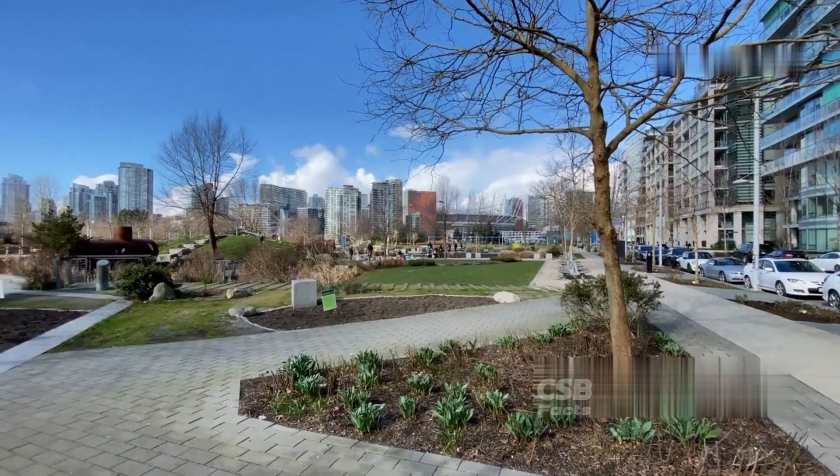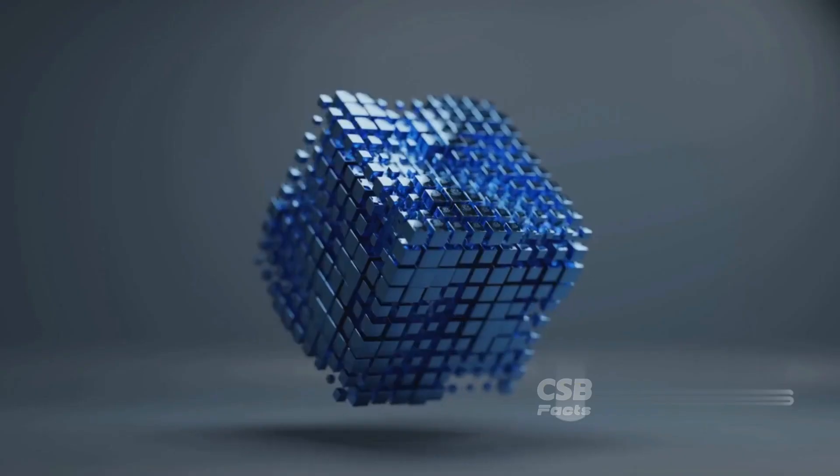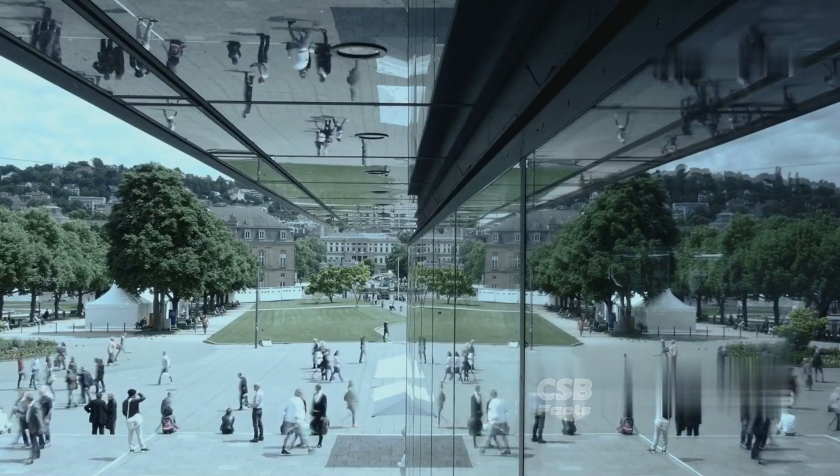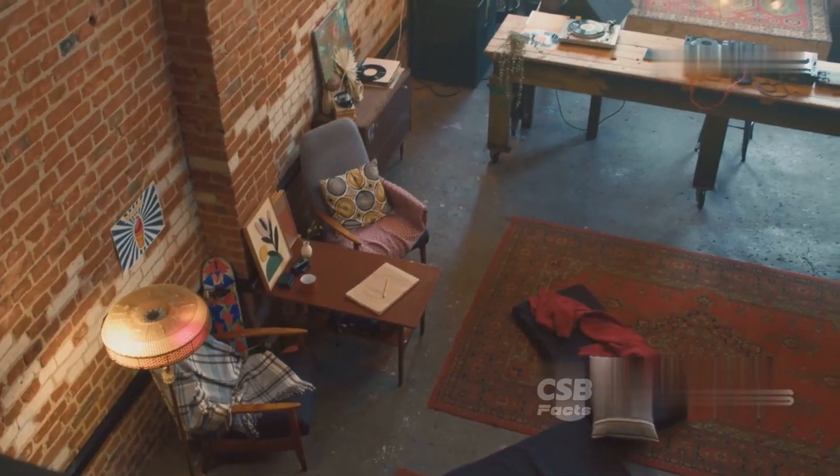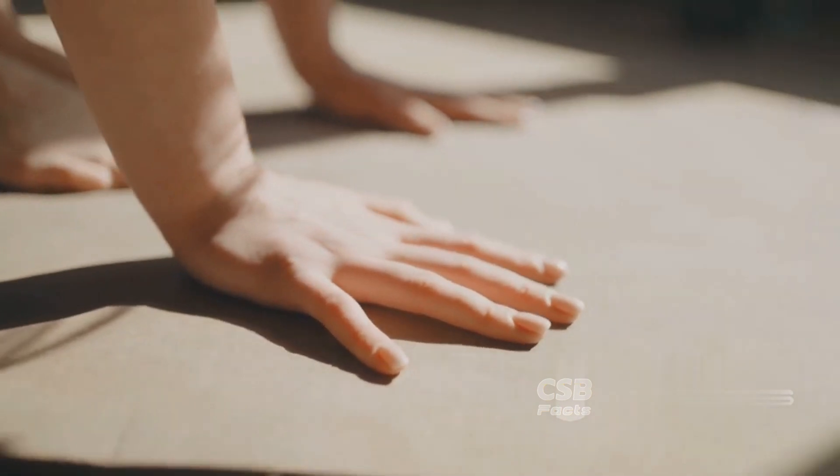The third dimension is our familiar world. We add height to the flat surface. Now we have objects with length, width and height. This is the world we experience every day. Look around you. Everything you see has three dimensions. Your house, your phone, even your own body exist in three-dimensional space.